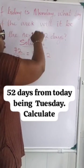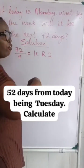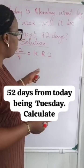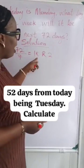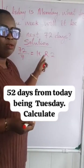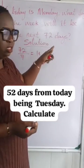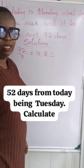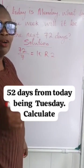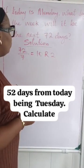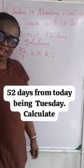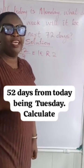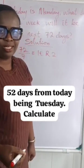So now, starting from Monday — every seven days brings you back to Monday, so after 10 Mondays, you count two more days: Tuesday, Wednesday. So the answer automatically is going to be Wednesday. After 72 days, you will get a Wednesday.